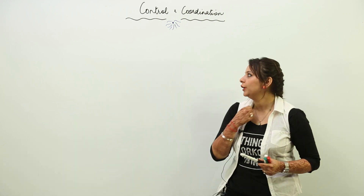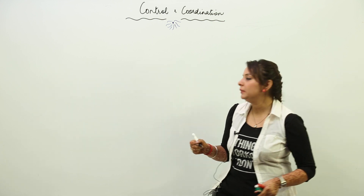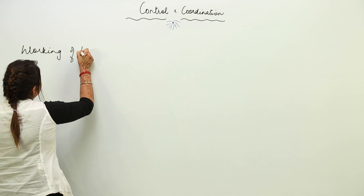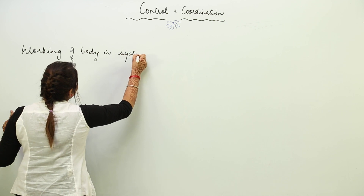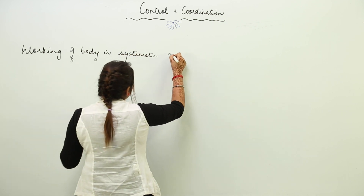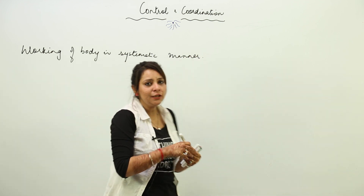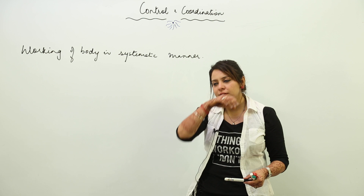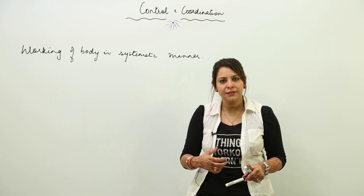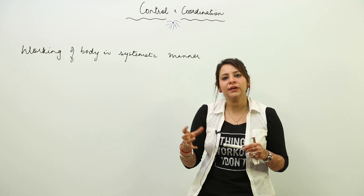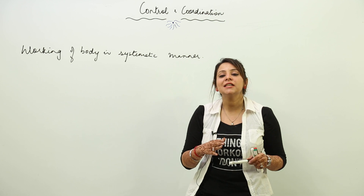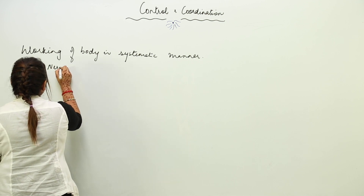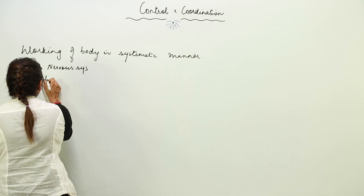We are going to start with control and coordination. It means working of the body in a systematic manner. For example, if you eat food, your stomach should be ready with gastric juices to digest it. All the activities of the body are interrelated, so the coordination between the various organs of the body is control and coordination. There are two systems which help in this: the nervous system and the hormonal system.